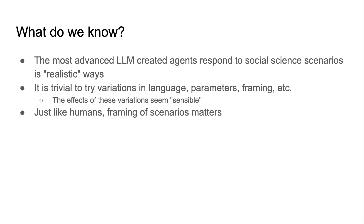Stepping back: the most advanced LLMs create agents that respond to social science scenarios in realistic ways. I would not say I confirmed these experimental results — I'm saying that using common sense knowledge of the social world, these responses aren't crazy; they're kind of what you'd expect if you did this with real people. It's also trivial to try variation in language parameters and framing — things that in a conventional lab would get expensive really fast.